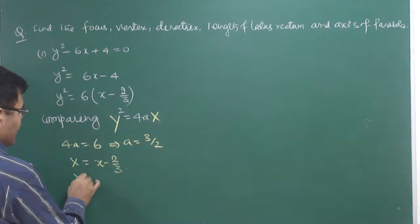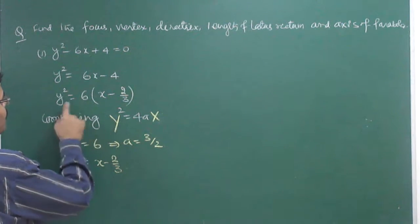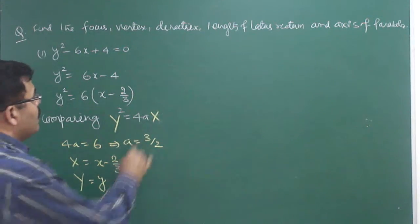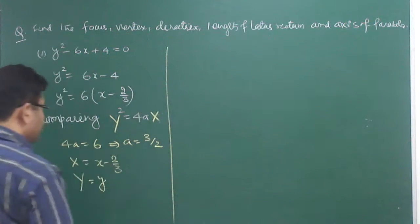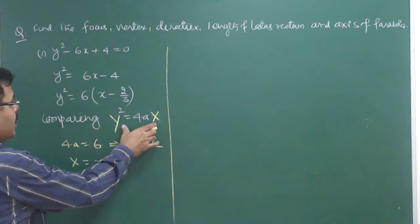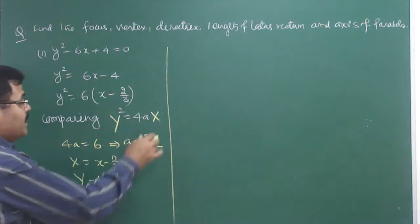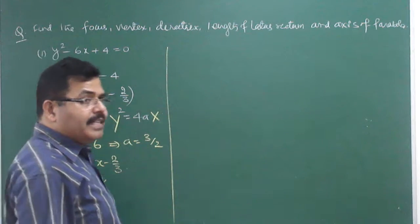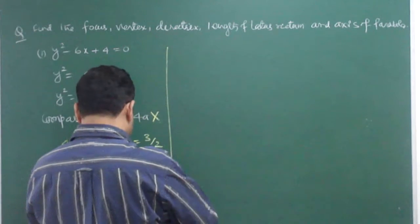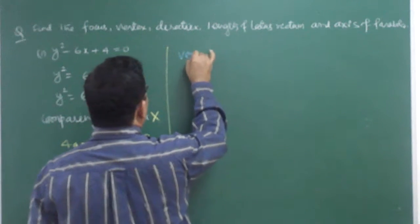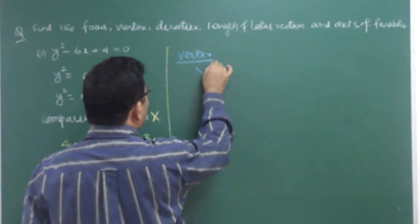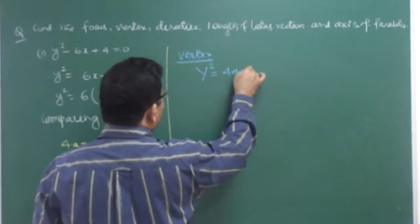Capital X is nothing else but x - 2/3, and capital Y is used for small y only. Now we can derive the properties. For the parabola y² = 4ax, the vertex is at (0, 0) in transformed coordinates.